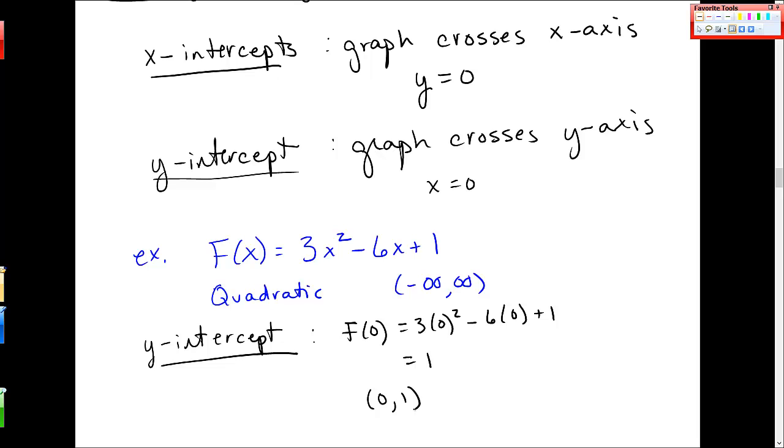So then I have to find the x-intercepts. So I'm going to get another page. f(x), let's remember what this is: 3x² - 6x + 1. And I need to now set y equal to 0, which in our world is, y is this f(x), the output. So I need to set that 0 is equal to 3x² - 6x + 1.